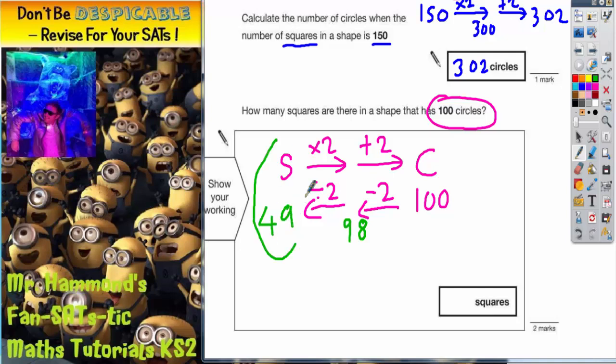And 98 divided by two is 49. And this gives us our answer. So if there were 100 circles, there would be 49 squares. So that's the answer that needs to go in there, 49.